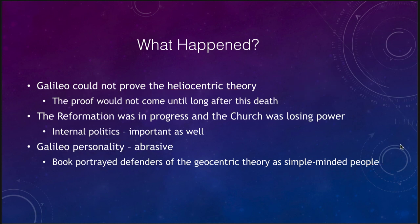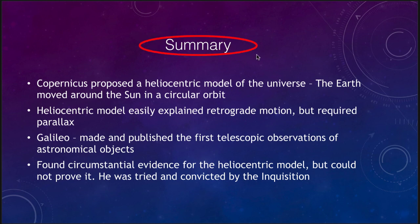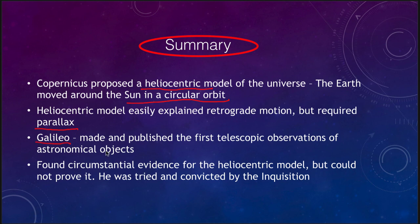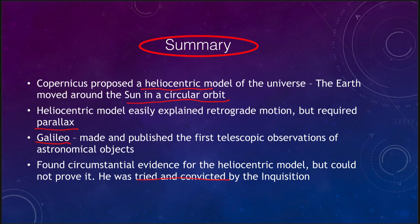To summarize: Copernicus proposed the heliocentric model of the universe in which the Earth moved around the sun in a circular orbit. The heliocentric model did easily explain retrograde motion but it required parallax, which would not be observed for hundreds of years. Galileo made and published the first telescopic observations of astronomical objects and found circumstantial evidence for the heliocentric model but was not able to prove it. He was tried and convicted by the Inquisition but eventually in 1992 was cleared by the church. That concludes our study of the origin of modern astronomy — until next time, have a great day everyone.